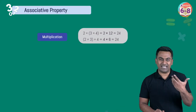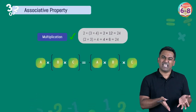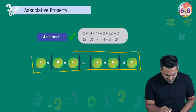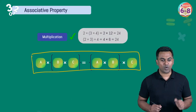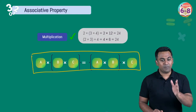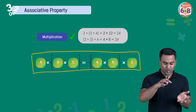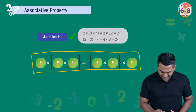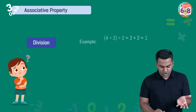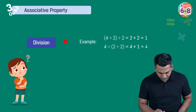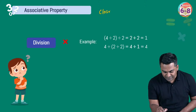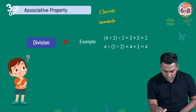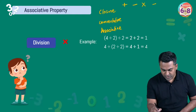For multiplication, the grouping doesn't matter — the answer stays the same, so multiplication follows the associative property: (a × b) × c = a × (b × c). For division, plugging in numbers shows both sides give different answers, so division does not follow the associative property.